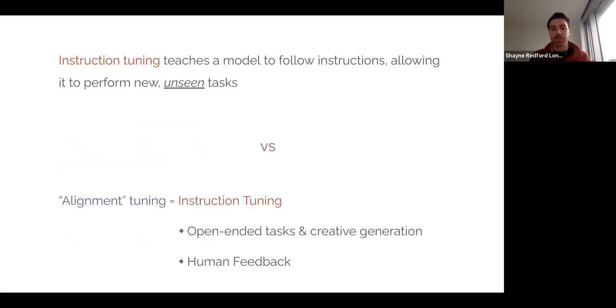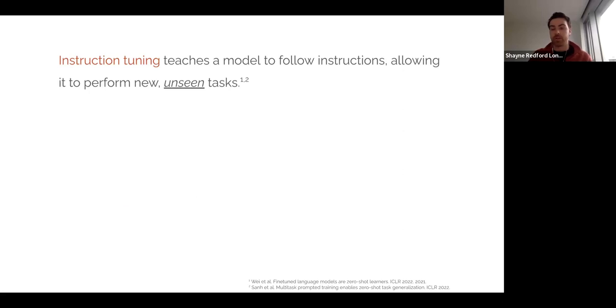So how is instruction tuning different from alignment tuning, which you might have heard from OpenAI's work? Well, the way that I'm defining it here is that alignment tuning is instruction tuning, but with a couple additional ingredients, which are they vary the tasks to include more open-ended generation and creative tasks than traditional instruction tuning methods that are open-source. And they also incorporate an element of human feedback, where humans choose which paragraphs or generations they prefer, so the model can use that signal to further improve its generations.